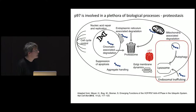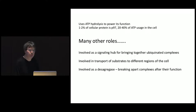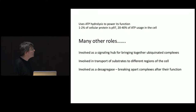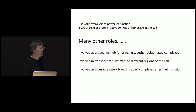We would like to understand how P97 is able to function, interact with various adapter molecules, and carry out its plethora of different biological activities. P97 uses ATP hydrolysis to power its function. Roughly 1-2% of cellular proteins are P97, and 20-40% of the ATP usage in a typical human cell is attributed to P97's functionalities. P97 is also a signaling hub for bringing together ubiquitinated protein molecules and dispersing them in various directions, and it serves as a desegregase, breaking apart complexes after they carry out their function.